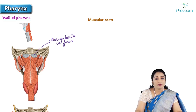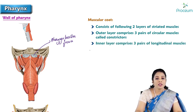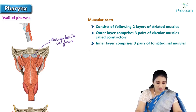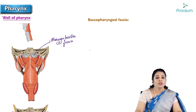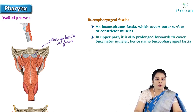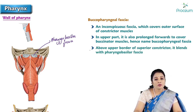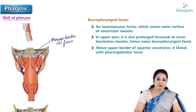Regarding the muscular coat: it contains two layers of striated muscles. The outer layer comprises three pairs of circular muscles called constrictors. The inner layer comprises three pairs of longitudinal muscles. The deepest layer is the buccopharyngeal fascia, which covers the inner surface of the constrictors and in the upper part is prolonged forwards to cover the buccinator muscle — hence the name buccopharyngeal fascia. Above the upper border of the superior constrictor, the buccopharyngeal fascia blends with the pharyngobasilar fascia.